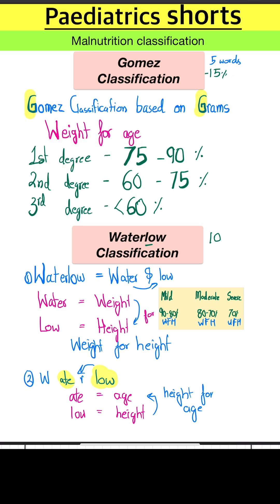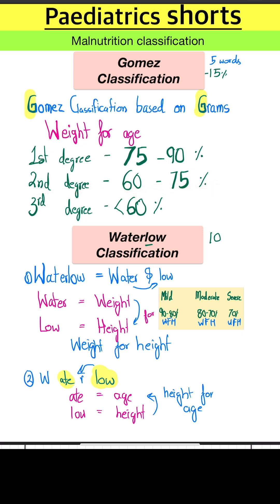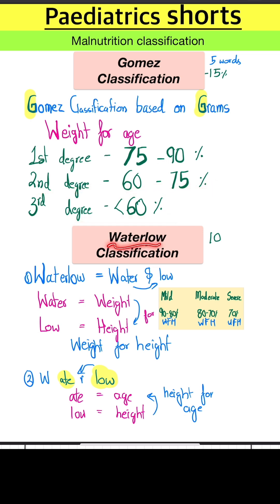First degree is 90 to 75%, so we have minus 15%. Second degree is 75 to 60%. Third degree is less than 60%. Waterlow classification is based on 'water' and 'low' — two words.